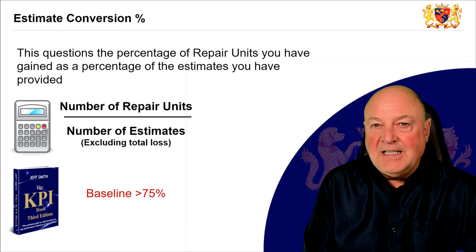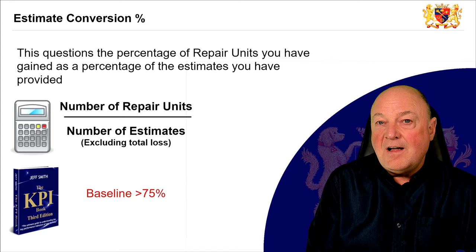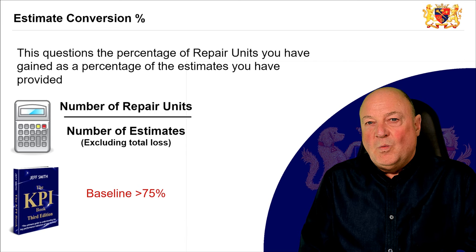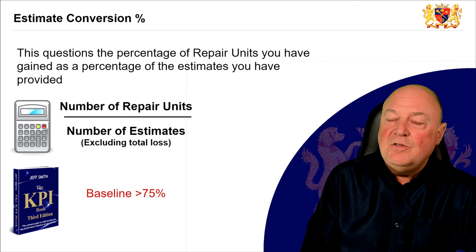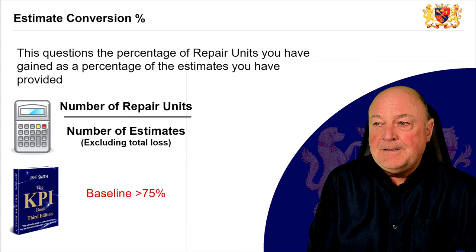That means if you've given 100 estimates, excluding total losses, you would expect — or at least should — convert 75 of those estimates into business. So you do 100 estimates, you get at least 75 jobs. Your results might be different, but the key performance indicator doesn't move. It's there for you to question your own performance — not a target to be hit, but a tool to force a question.